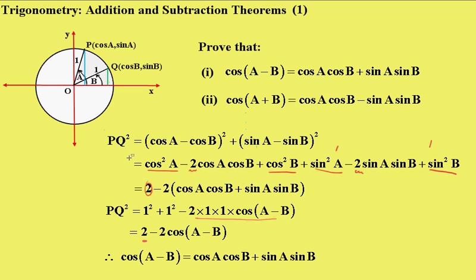Now when you see that PQ² equals this, and PQ² equals this as well, then the 2s will cancel out, and the -2s will cancel out, and you get cos(A - B) = cos A cos B + sin A sin B, which was the desired result.